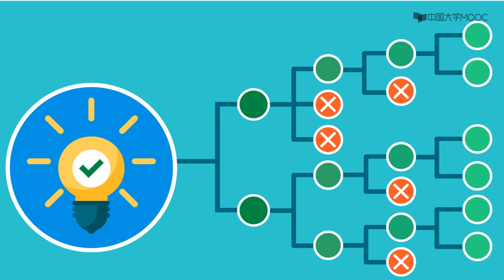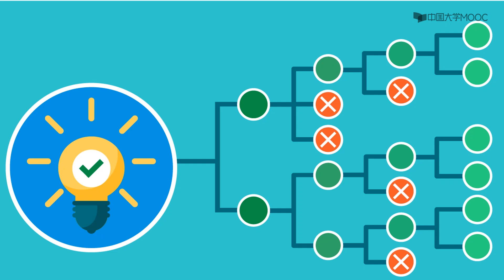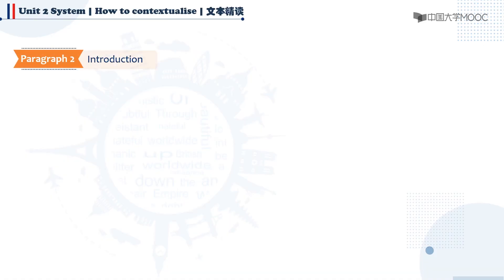Other than justifying your research, what is also important to a good contextual section is that it needs to specify how the study contributes to the research field. One useful way of doing it is by addressing the knowledge gap. Knowledge gap is the research question which has not been answered appropriately or at all in the field of study. Identifying and addressing a knowledge gap make your research truly contribute to the existing knowledge.